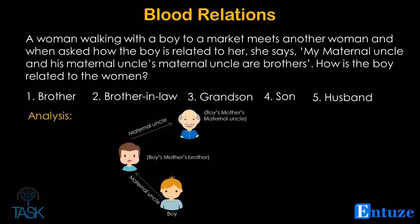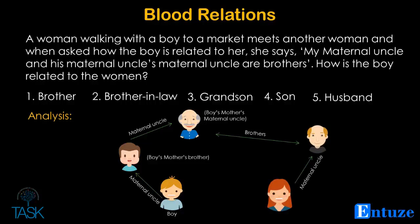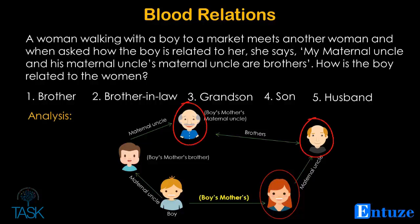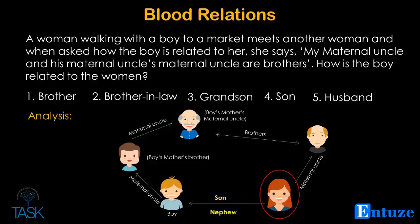Let us now incorporate this analysis and rephrase the original statement. From this statement, we can conclude that the woman is either the boy's mother — this will be the case if the boy's mother has two maternal uncles — or she is the boy's mother's mother's mother's sister. Thus, taking this thought process forward, the boy is either the woman's son or her nephew.